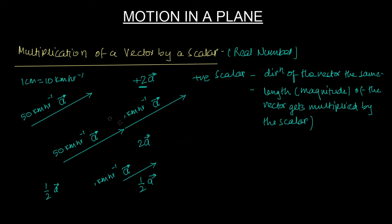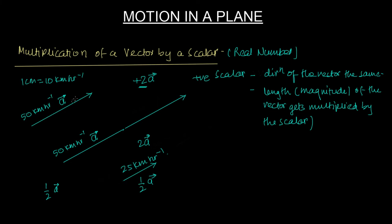This is half a, and this whole thing is 2a. How many kilometers does half a represent? It will represent 25 km per hour. And this whole thing represents 100 km per hour — 50 and 50 together is 100 km per hour.